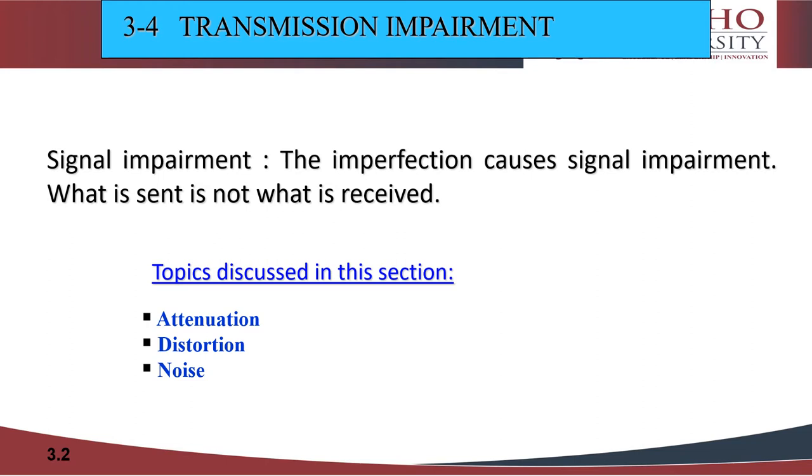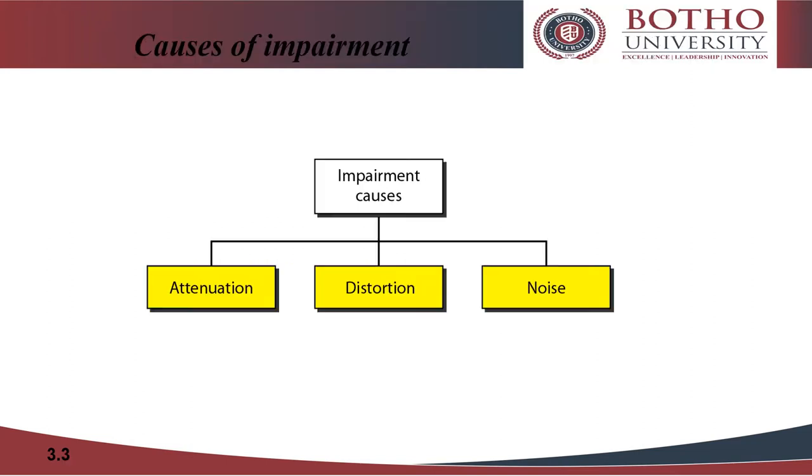The imperfection causes signal impairment. This means that the signal at the beginning of the medium is not the same as the signal at the end of the medium. Impairments exist in all forms of data transmission. Analog signal impairments result in random modifications that impair signal quality, while digital signal impairments result in bit errors. There are three major causes of impairment in guided transmission media: attenuation, distortion, and noise.